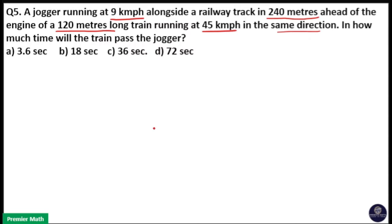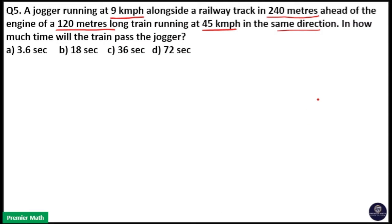A jogger is running at the speed of 9 kilometers per hour alongside a railway track, and he is 240 meters ahead of the train engine. That means if the train is here, he is 240 meters ahead of this train engine, so the distance between this jogger and this train is 240 meters.